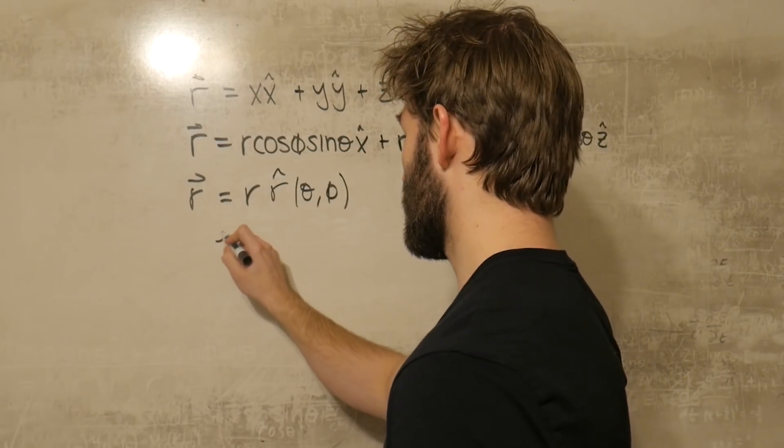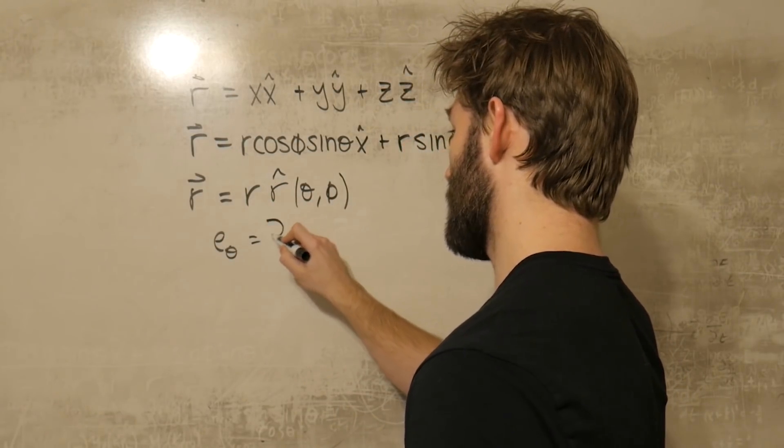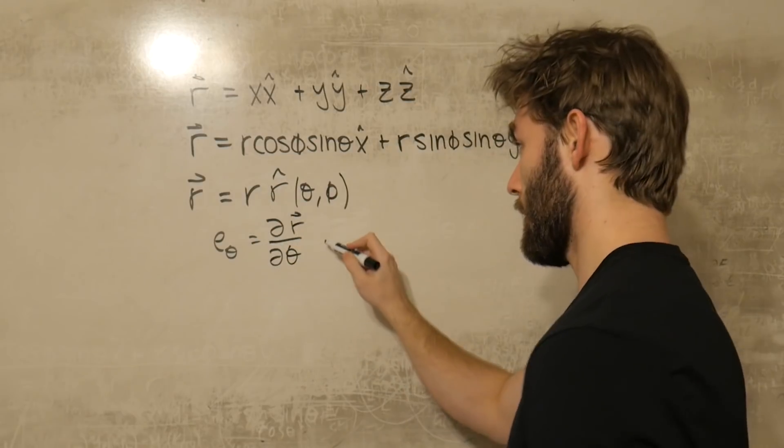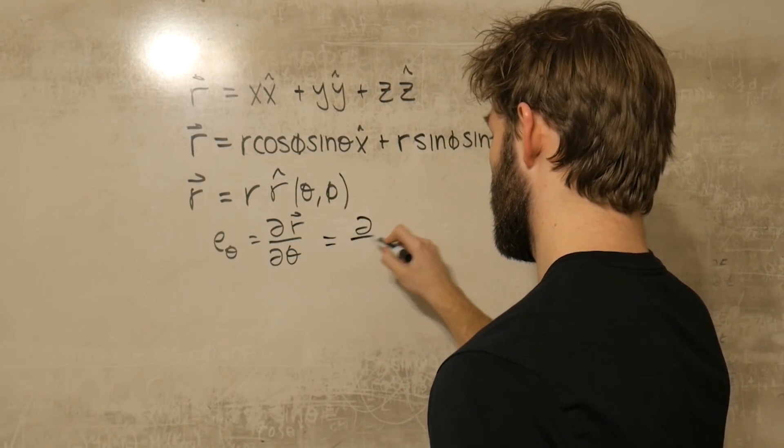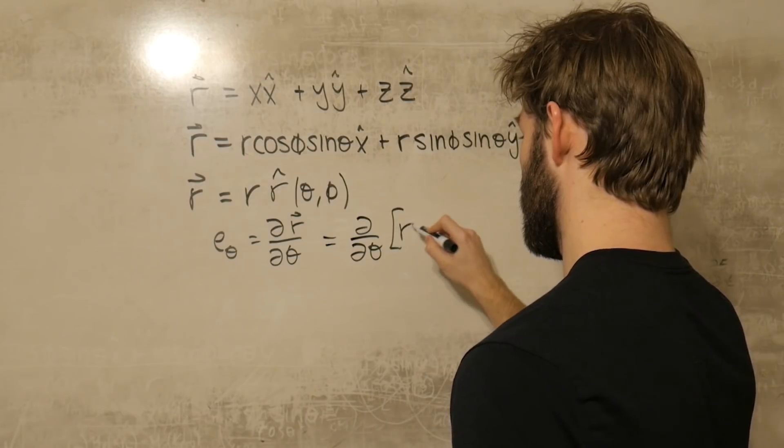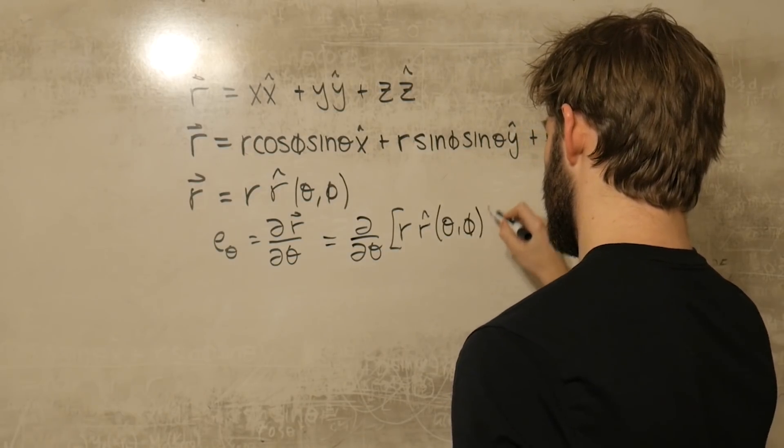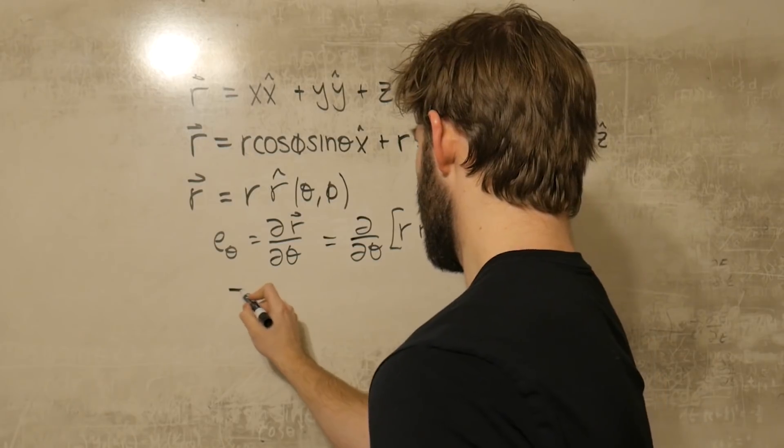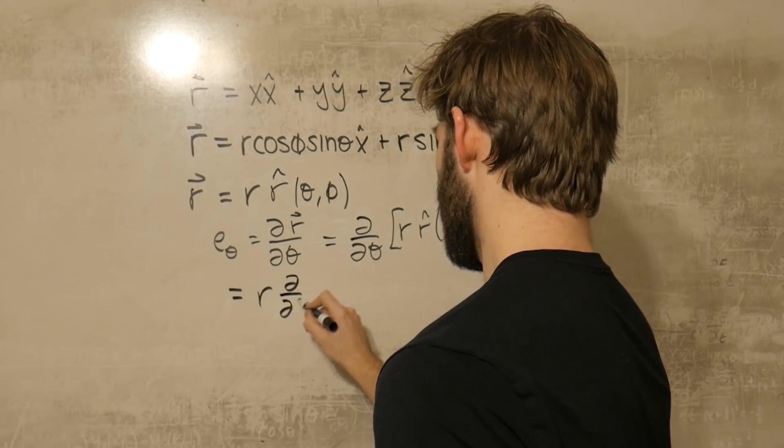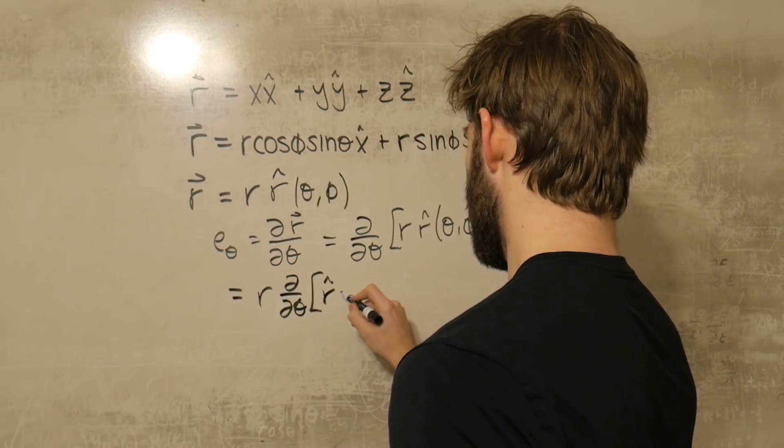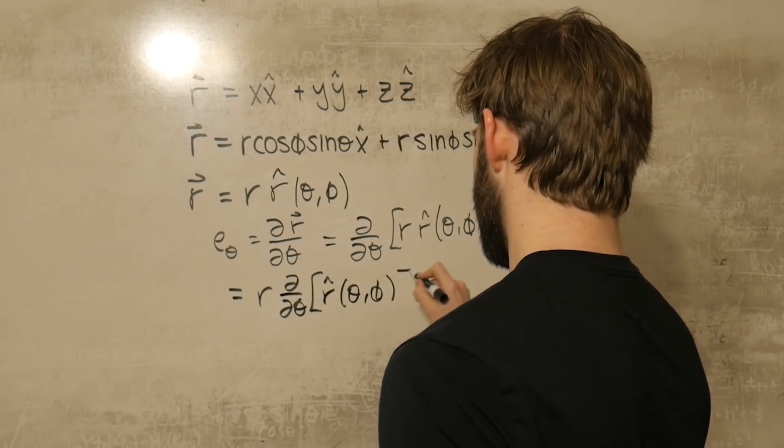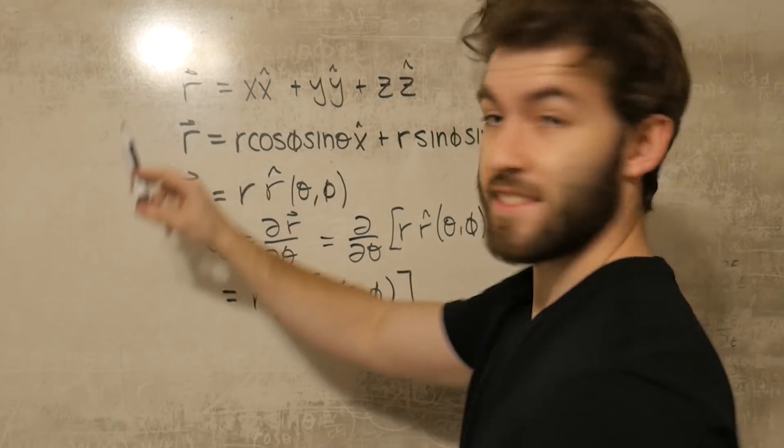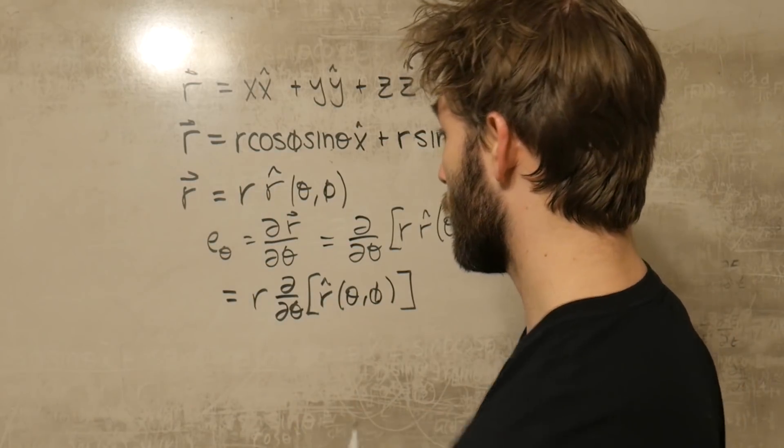Next we can define a new vector in terms of theta that's going to be the same concept. We're going to take the derivative of this r vector with respect to theta. Well here's our r vector, so that's going to be, well this d d theta is blind to this r here. So what this becomes is just r d d theta of this unit vector theta and phi.